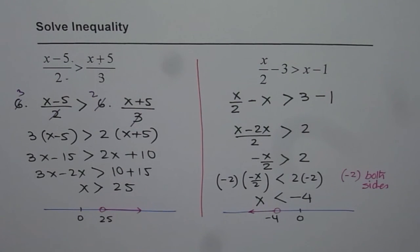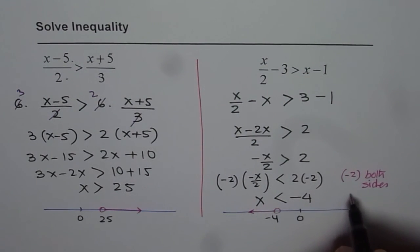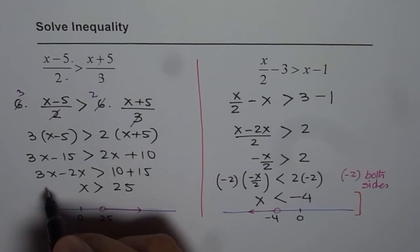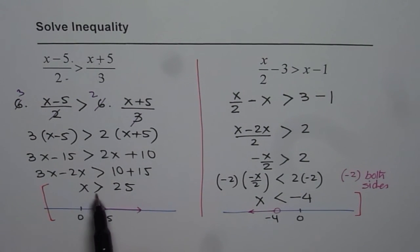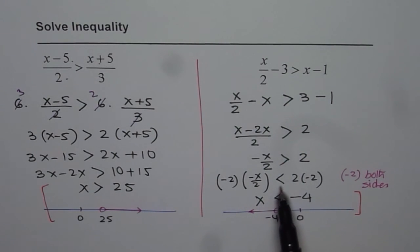So the solution is right there for you. That is a part of solution. X greater than 25 for the first case and x less than minus 4 for the second. I hope with this, you can solve inequalities involving fractions and if some numbers are multiplied with negative or divide by negative sign. Remember, you need to reverse the direction of inequality. That is what we learned from here. Thank you and all the best.